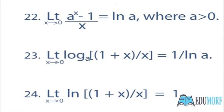Twenty-second, limit x tends to 0 of (aˣ − 1)/x is equal to ln a, where a is greater than 0. Twenty-third, limit x tends to 0 of log base a of (1 + x)/x is equal to 1 upon ln a.